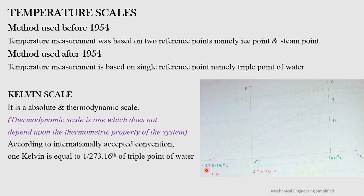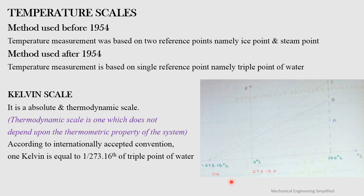To understand how the value of 0 K was derived: if you plot pressure versus temperature in degrees Celsius for different substances A, B, and C, all the lines are straight and they all coincide at a single point at a temperature of −273.15°C. This point is taken as zero kelvin — the minimum possible temperature.